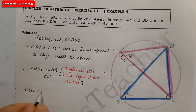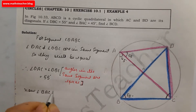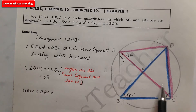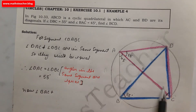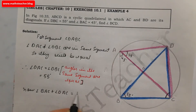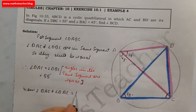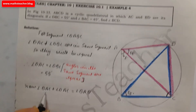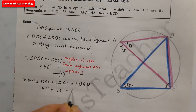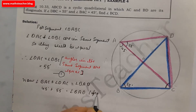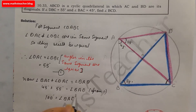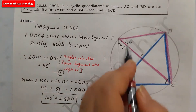Now, angle BAC plus angle DAC equals angle BAD. Angle BAC is 45 degrees and angle DAC is 55 degrees (from equation 1). So summing both: 45 plus 55 equals 100 degrees, therefore angle BAD equals 100 degrees.